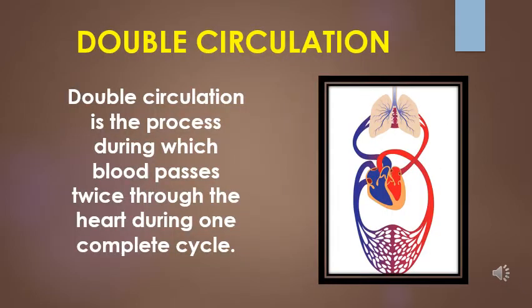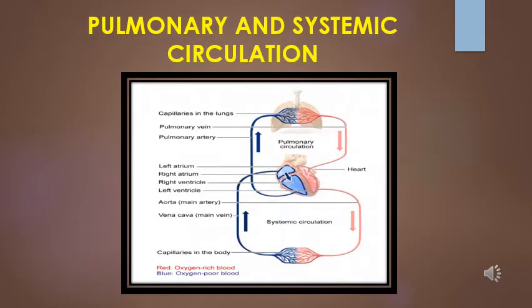So children, by this you must have understood that blood goes through the heart twice during each cycle, means the blood passes through the human heart two times to supply once to the whole body. So it is called double circulation. This means that we have two loops in our body in which blood circulates. In human beings, the circulation cycle works in two ways, pulmonary or lung circulation and systemic or body circulation.